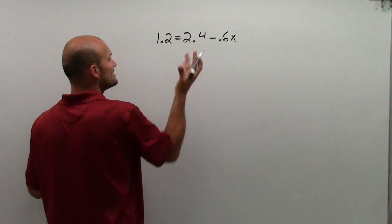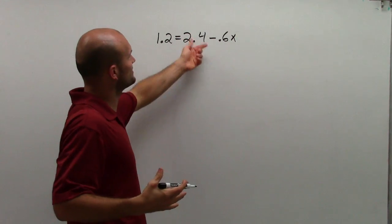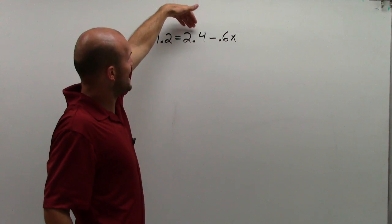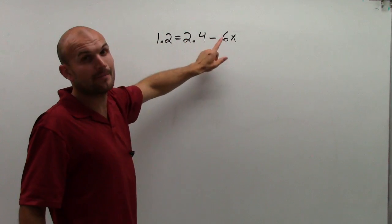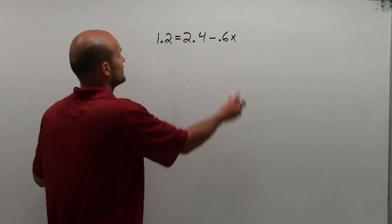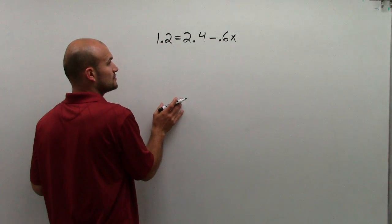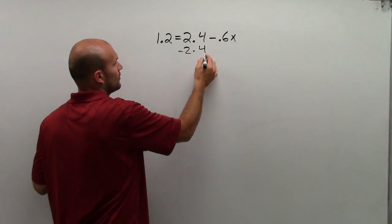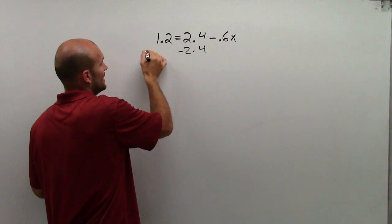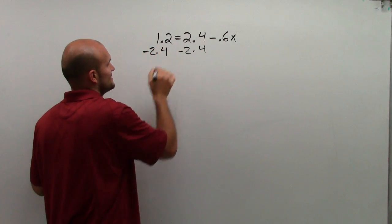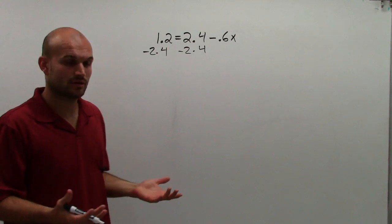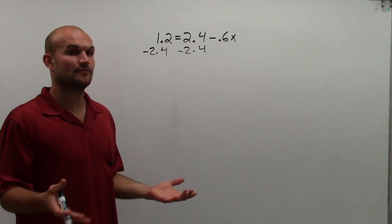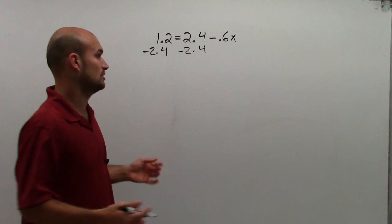So here, just look at what's happening to your variable. My variable is being added by 2.4 because 2.4 is positive, and it's being multiplied by negative 0.6. So to undo addition of 2.4, I need to subtract 2.4 on both sides of the equal sign, using the subtraction property of equality. Therefore, that's going to produce equivalent equations.